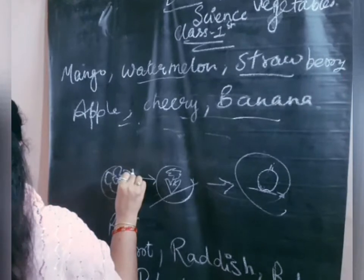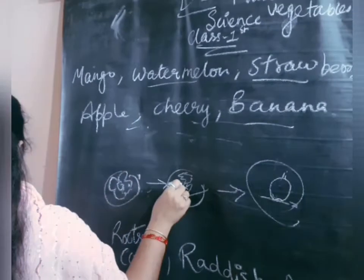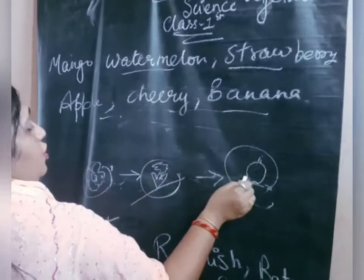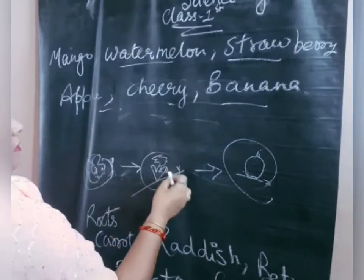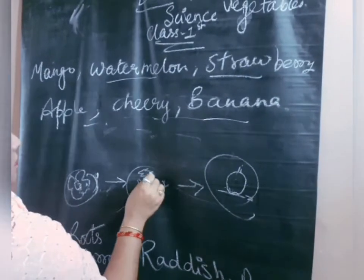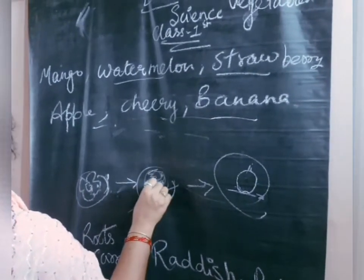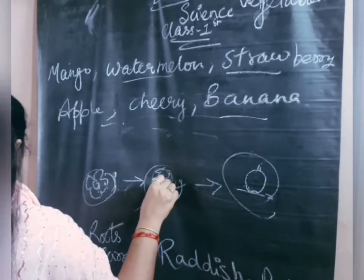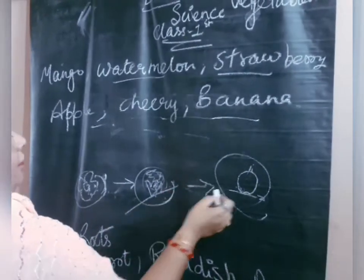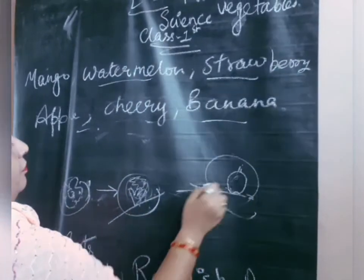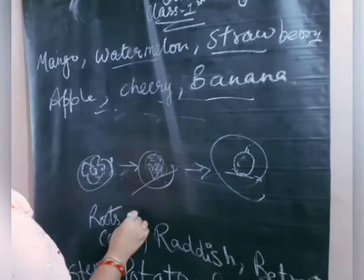After the petals fall off, the flower changes into a fruit. This is a flower, this is a petal, and this is the fruit starting to form. When the petals fall off, this flower turns into a fruit.